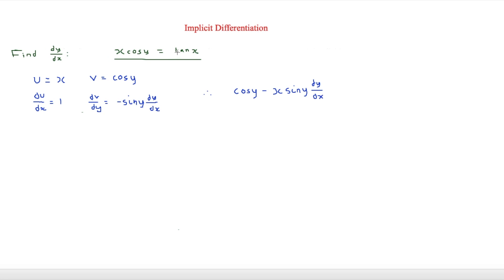Now we differentiate tan x on the right-hand side. tan x simply differentiates to give sec²x. If you don't understand why, it's because you use the quotient rule on sin x over cos x, but it is more useful to just remember sec²x — especially in the exam, you don't want to have to derive it.